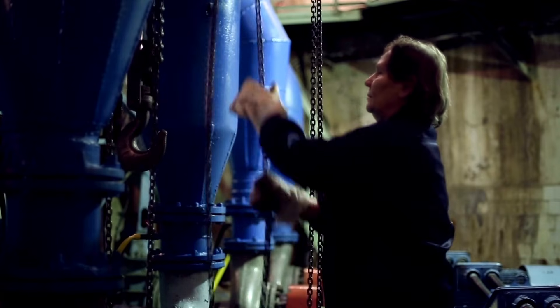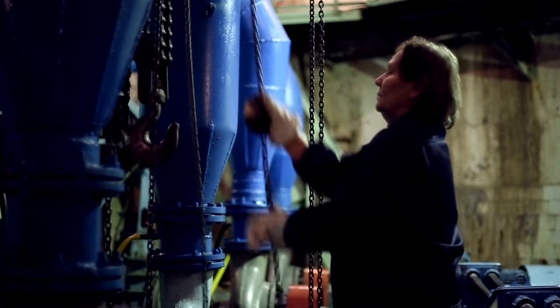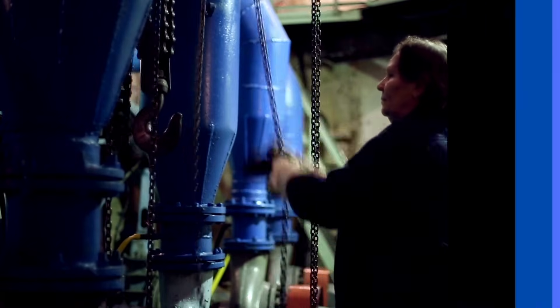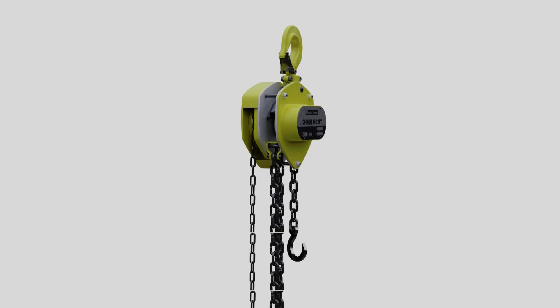Now comes the functioning of the chain block, which enables us to lift tons of load manually with ease. A standard chain block consists of a lifting chain, a hand chain and a base hook.